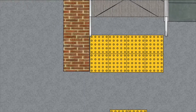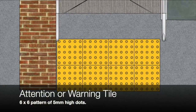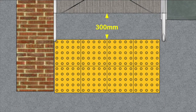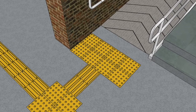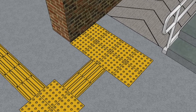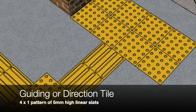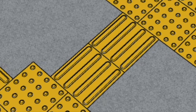Tactile tiles — TGSI. Attention or warning tiles have a pattern of 36 raised dots, 5 millimetres high. These should be placed 300 millimetres from the beginning and end of each ramp. Guiding or directional tiles have four raised lines on a 300 by 300 tile, also raised 5 millimetres, and guide people with visual impairment in the direction they need to go.